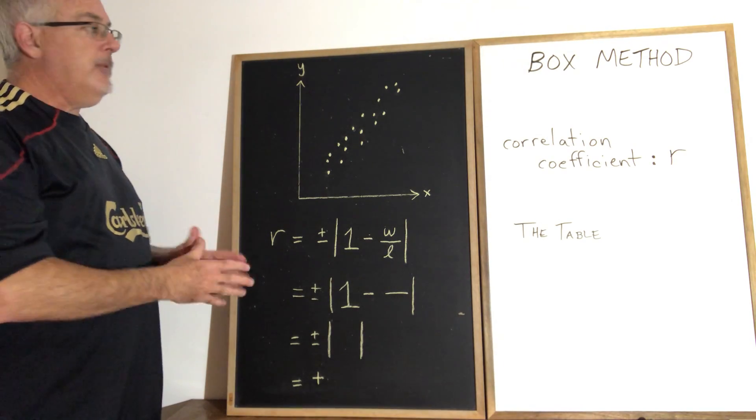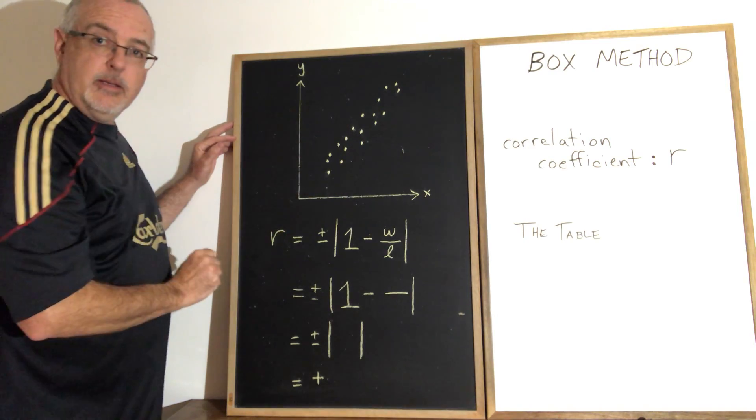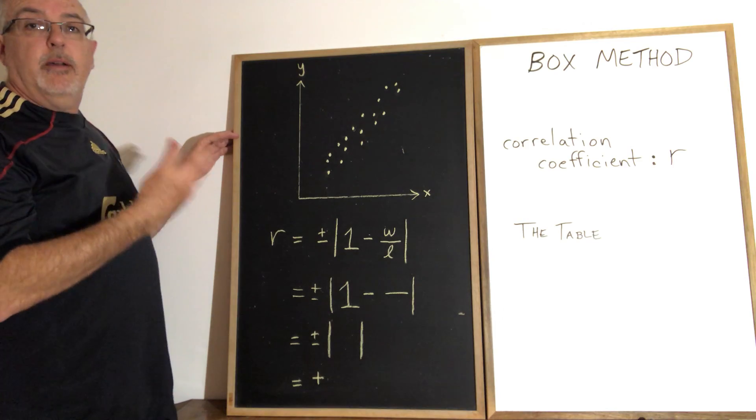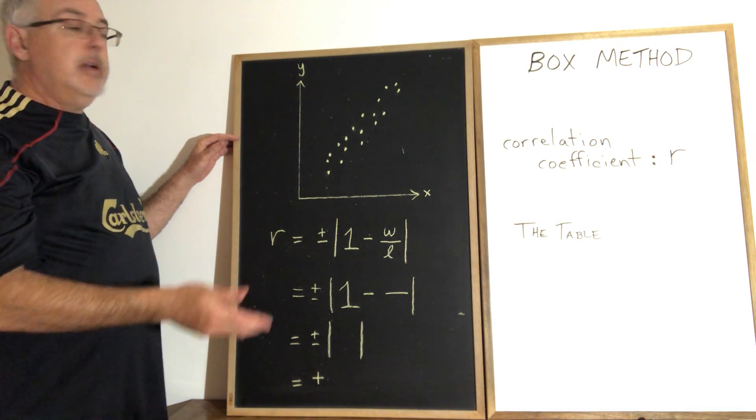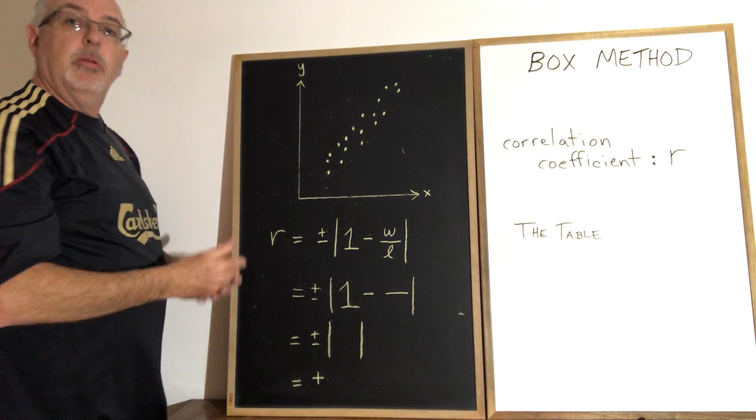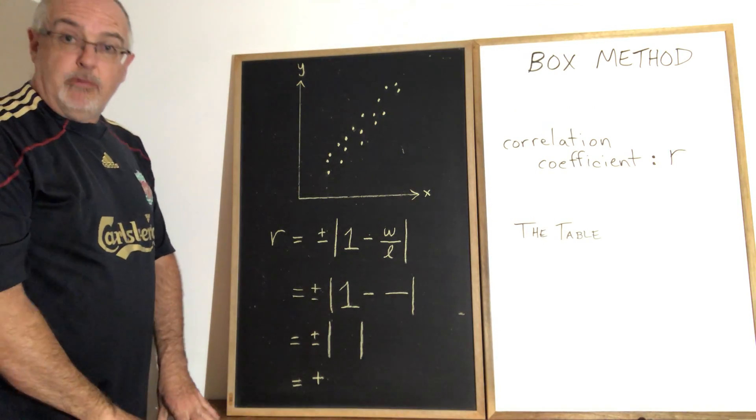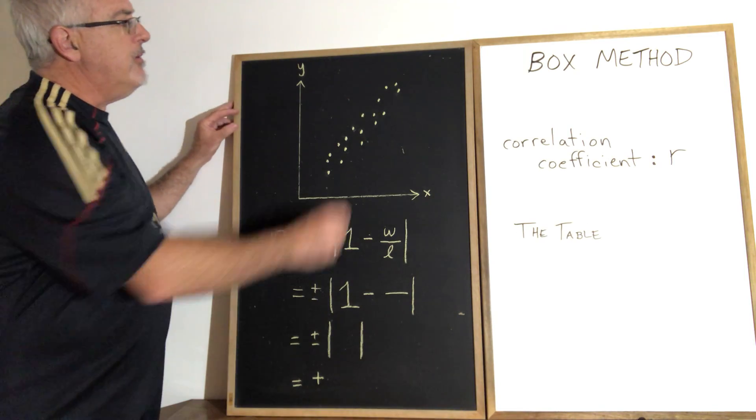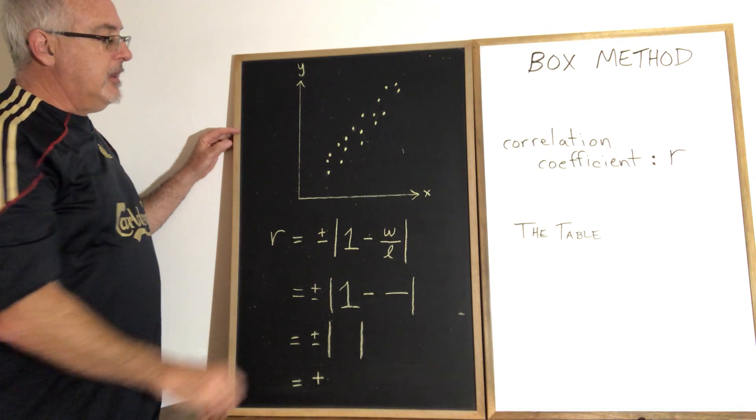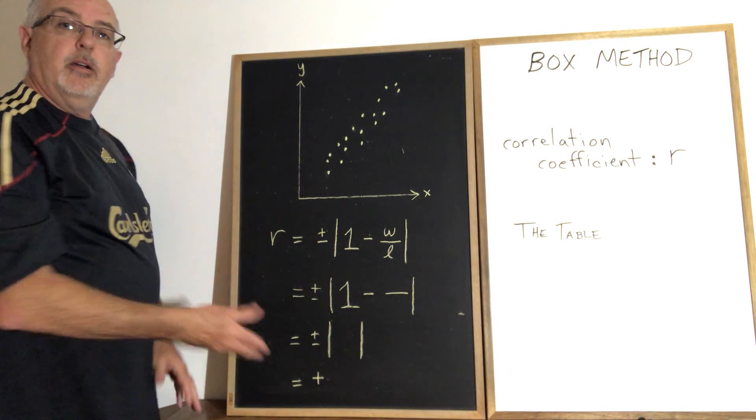To do this you have to have a scatterplot. Either you were provided with one and it looks like this, a graph with a bunch of dots on it, or you would have to have been given a table of values so that you can graph it yourself. Once you have the scatterplot you can draw your box. They call it the box but it's really a rectangle. We're drawing a rectangle that includes all of these points and then using the length and the width of the rectangle in this formula to calculate our r-value.